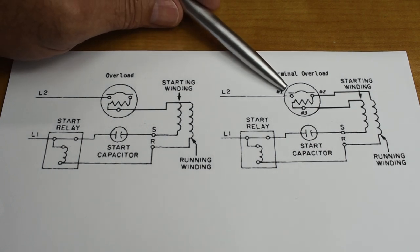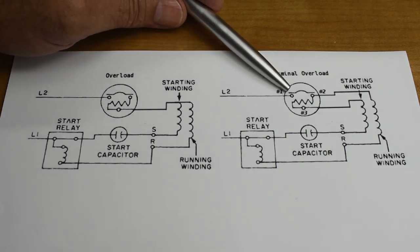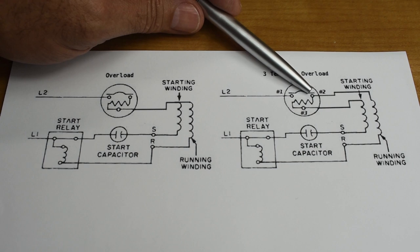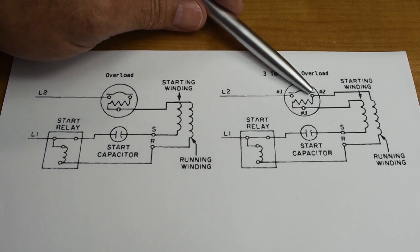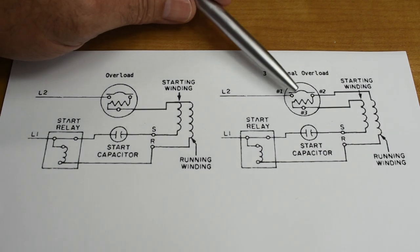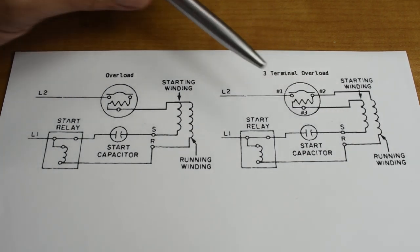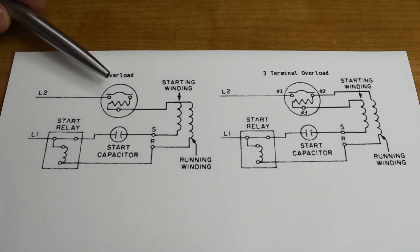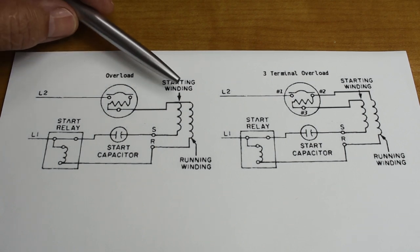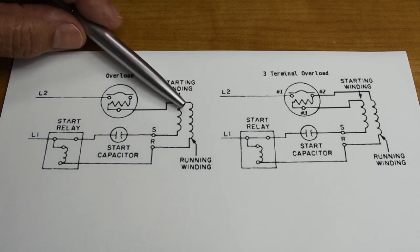On this one here with 3 wires, current flows in across the opposite side, and then the run winding is connected to pin 2. And then the start winding is connected after the resistive element. The only way this is going to open up the circuit is if there's an excessive load placed on the motor, causing more current to be drawn by the motor and increasing the level of heat.